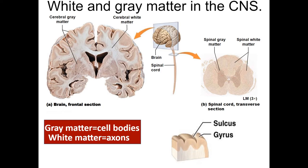This difference relates to function. Cell bodies receive signals; axons send signals. In the brain, axons are in the middle to efficiently send signals between hemispheres and different regions — wiring them along the outside would take more tissue and be less efficient. In the spinal cord, myelinated axons run along the periphery to connect to the peripheral nervous system, while cell bodies sit in the center to relay information up to the brain.